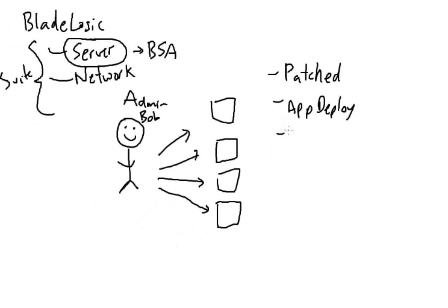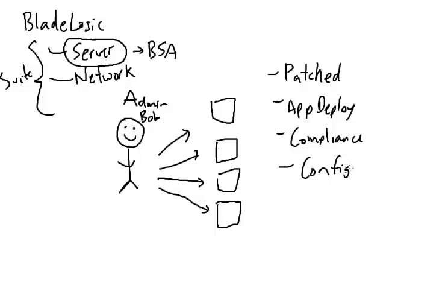Depending on Bob's role and the size of the company, there's also compliance — making sure systems are secure — along with general configuration updates like administrating users or making config changes. These are all typical tasks that Bob does on a daily, weekly, or quarterly basis for his group of roughly 40 to 48 servers.